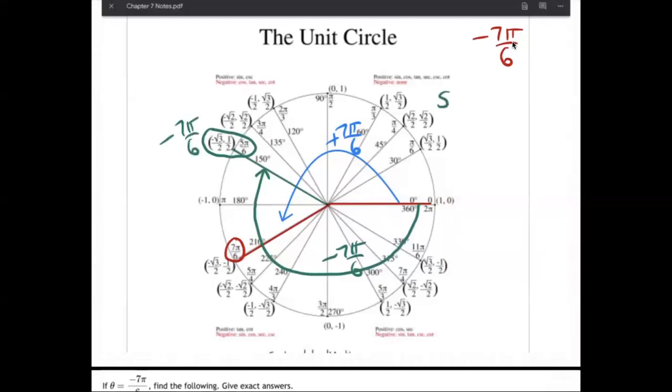So we can say the sine of negative 7π over 6. Remember, it's right here is cosine. The first one's always cosine. The second one's always sine, right? So the sine of negative 7π over 6 would be a half, and the cosine of negative 7π over 6 is negative square root of 3 over 2. I'm just grabbing those right here.